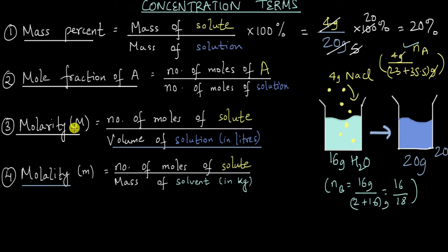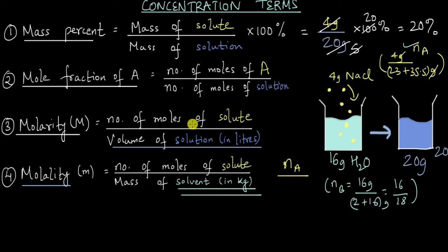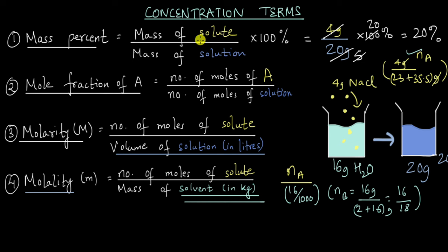Finally, we have molality, which sounds very similar to molarity but is represented by a small m, and the definitions are different. The numerator again has the number of moles of solute, Na. But now we divide by the mass of the solvent — not the volume, and not the solution. Molality is the only one in this group that uses solvent in the denominator. The mass of the solvent here is 16 grams, written as 16/1000 to convert to kilograms. This gives us the molality. These are the four concentration terms used in chemistry.